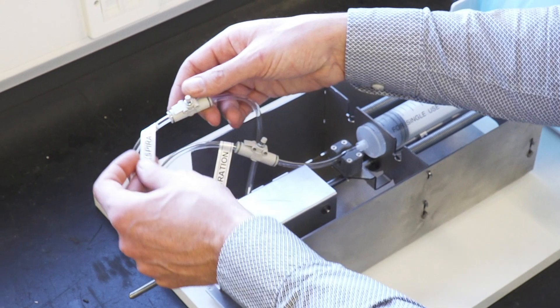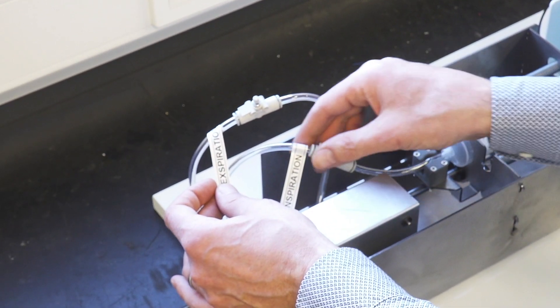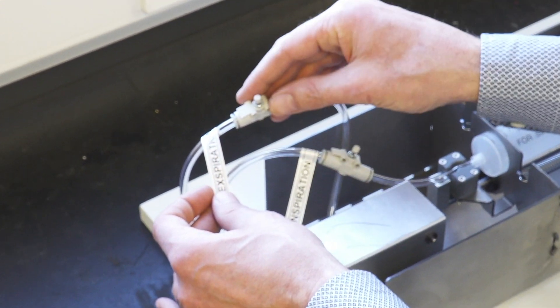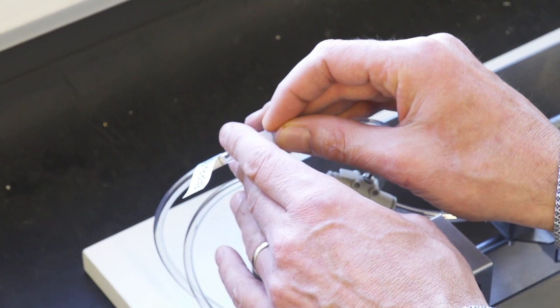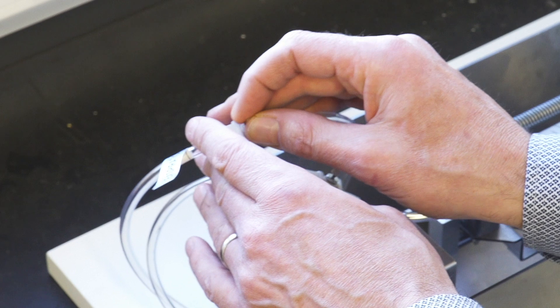So these two controls are for the breath in and the breath out. They can each be set individually, so for instance if you want it to cycle a bit faster we can increase the expiration.